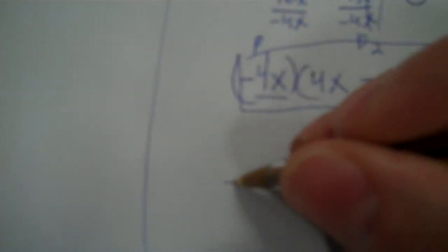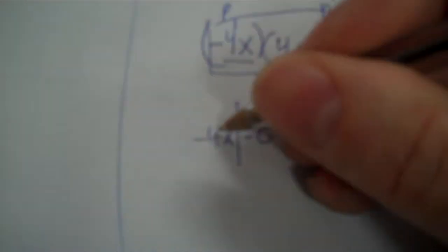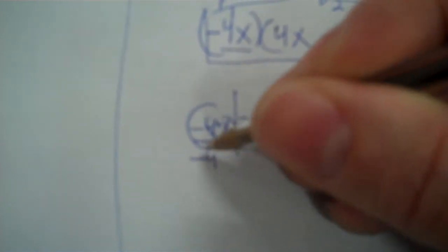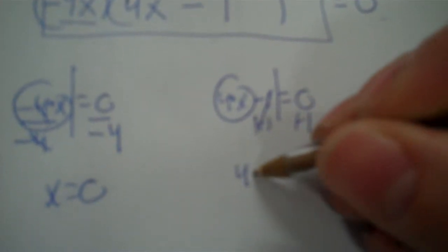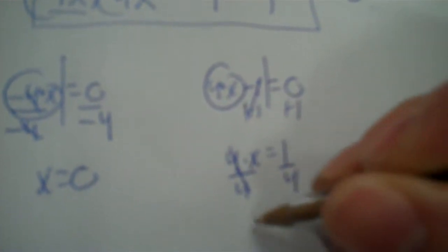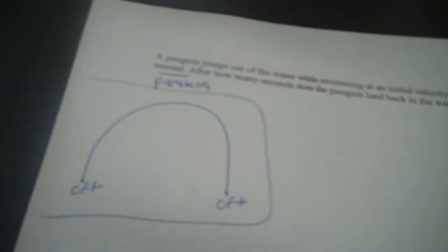So negative 4x could equal 0, or 4x minus 1 could equal 0. So divide each side by negative 4 and get 0. The 0 seconds means there was 0 seconds when he started, which makes sense. Over here, plus 1 plus 1 gives 1, divide by 4: 1 divided by 4 is 0.25. You can put 0.25 or second PRB — so 1 fourth or 0.25. One fourth of a second is how long it took him to land. It's a fat penguin, so his vertical is not very good.